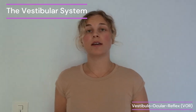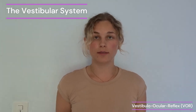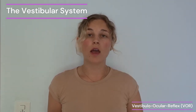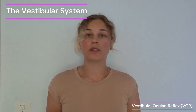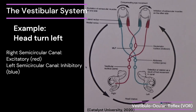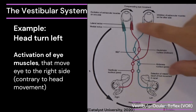For gaze stabilization exercises, the vestibulo-ocular reflex is especially important to understand. Simply put, the reflex stabilizes vision on the retina of the eye when you move your head and fix an object. When you turn your head to the left side, the right semicircular canal works excitatory while the left one works inhibitory. This results in the eye muscles for eye movement to the right side being activated, as seen in the graphic.